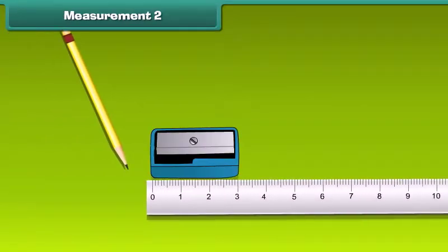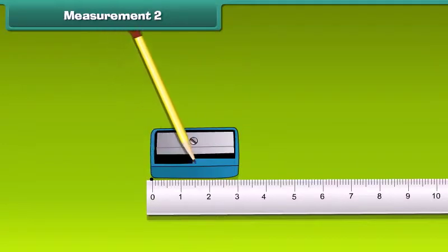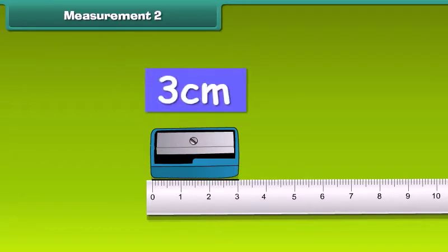Now let us measure a pencil sharpener. Place the sharpener near a scale as its one end is at 0. The other end of the sharpener is at 3. Therefore, the length of this sharpener is 3 cm.